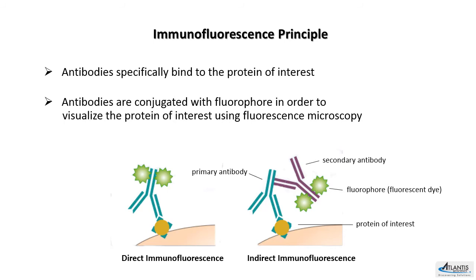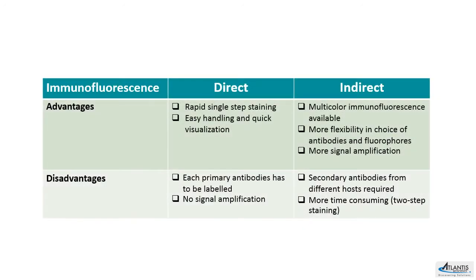There are two types of immunofluorescence: direct and indirect. The main difference is that direct immunofluorescence has the primary antibody conjugated directly to fluorophores, whereas in indirect immunofluorescence, fluorophores are conjugated to secondary antibodies. These direct and indirect methods have their own advantages and disadvantages, so the choice depends on which is suitable for the user's application.